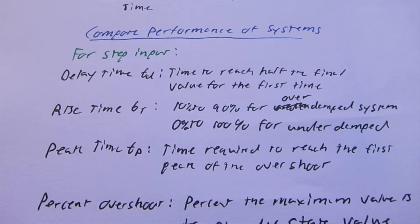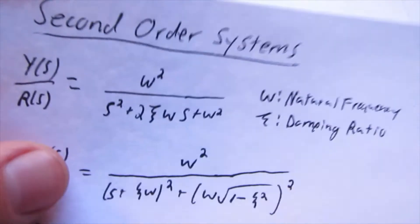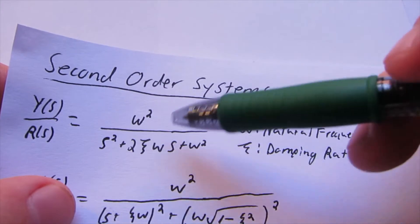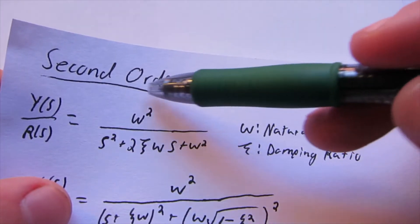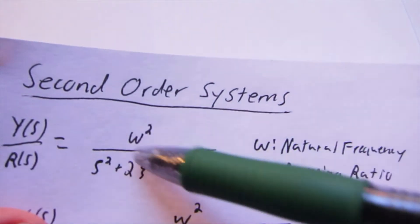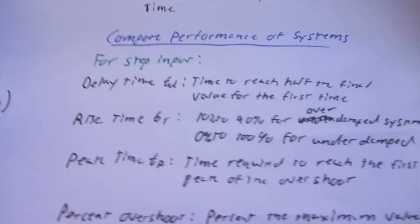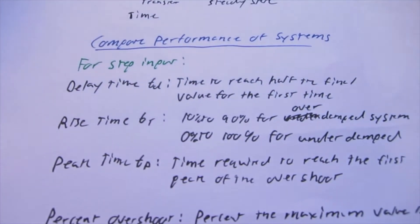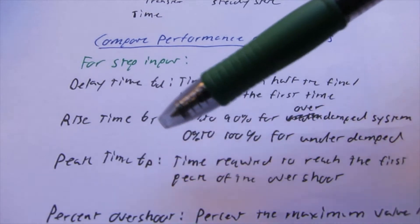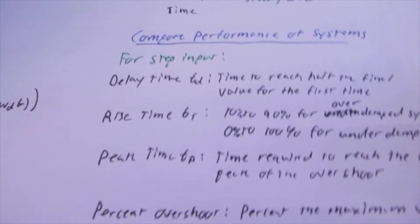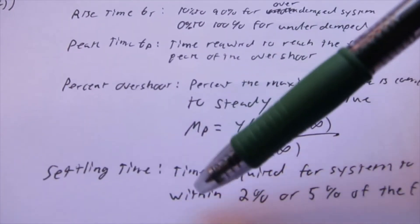But for our system, we need ways of comparing the systems. Let's go back here. This is our system, and this can be broken up of different values. This is our second order system, but depending on the values in this transfer function here, the performance of our system can vary greatly. So we have delay time, rise time, peak time, percent overshoot, and all these, and settling time.